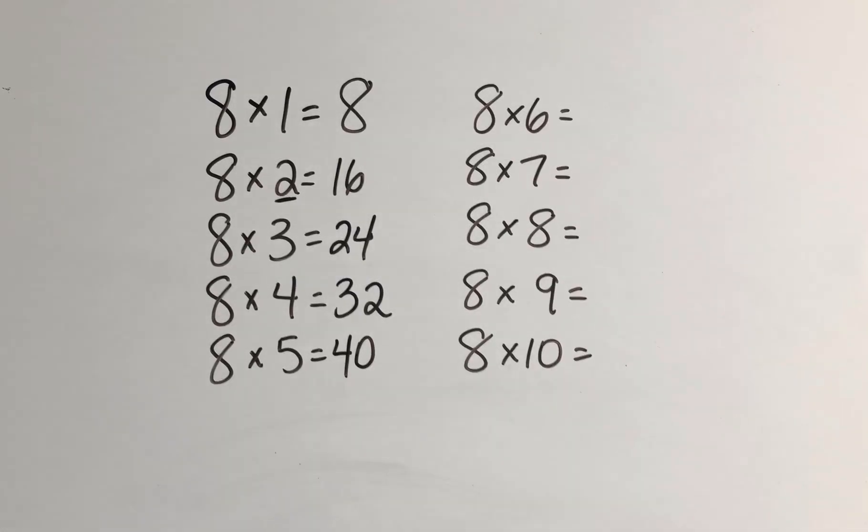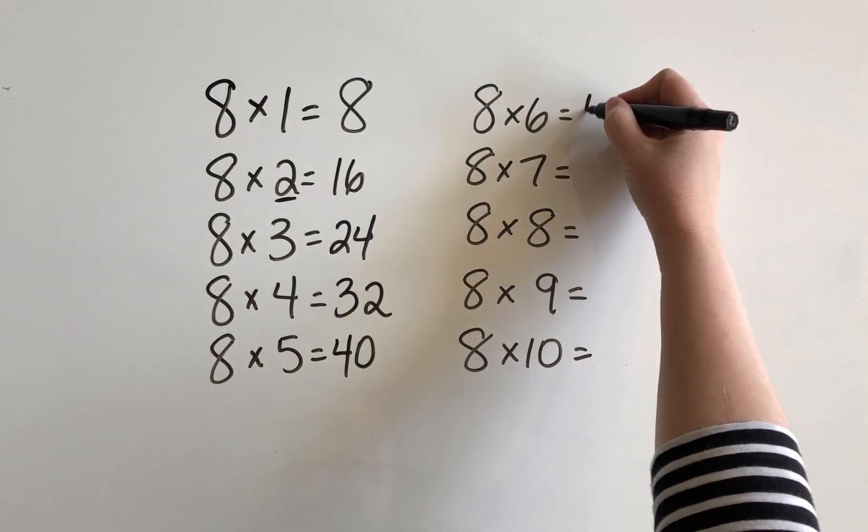Now let's talk about 8 times 6 or 6 times 8. I know that 5 groups of 8 was 40. So 6 groups of 8 is just going to be 8 more. So that's going to be 48.